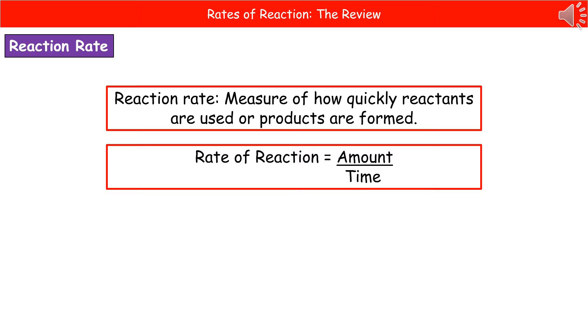Quite simply, all that means is that it's a measure of how quickly reactants are used or how quickly products are formed. And in order to work out the rate of a reaction, all you do is the amount of either reactants or products and we divide that by the time it's taken.